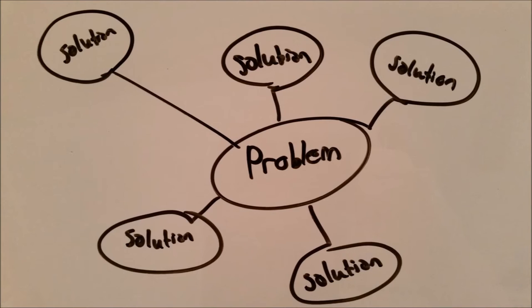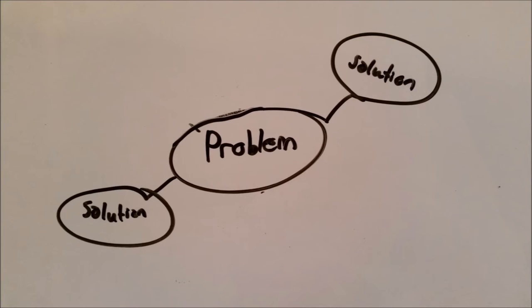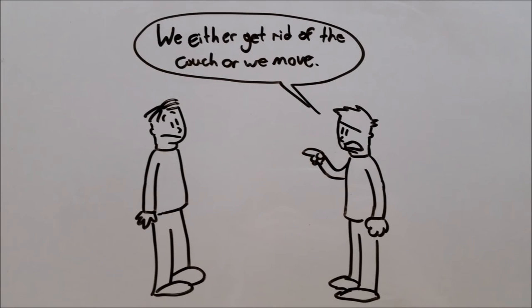This fallacy assumes that someone has taken an issue which could have multiple solutions, and oversimplified it into exactly two possible outcomes. If Alan says, we either get rid of the couch or we move, he's ignoring any other ways to solve the problem, and only focusing on outcomes that would support his side of the argument.